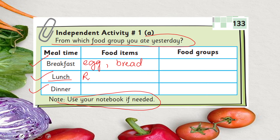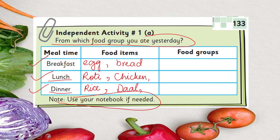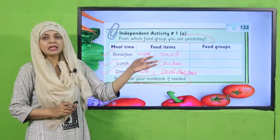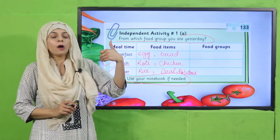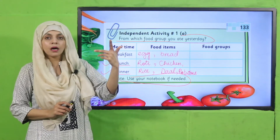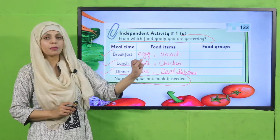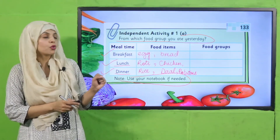For lunch I took roti and chicken, and I also took some watermelon. For dinner I took rice, some dal, and also some potatoes. Now for the food group: bread belongs to carbohydrates; roti and chicken belong to meat and carbohydrates; rice, dal and potatoes belong to grains, pulses/legumes, and vegetables.